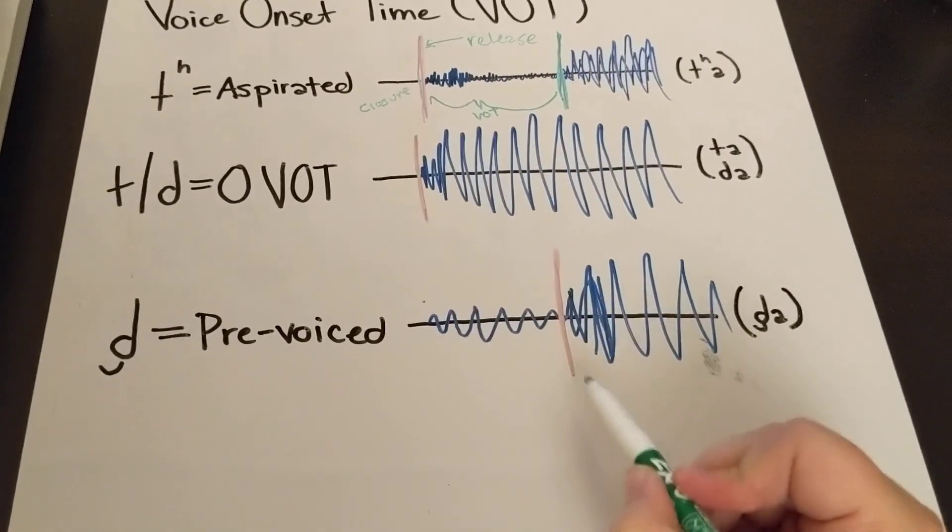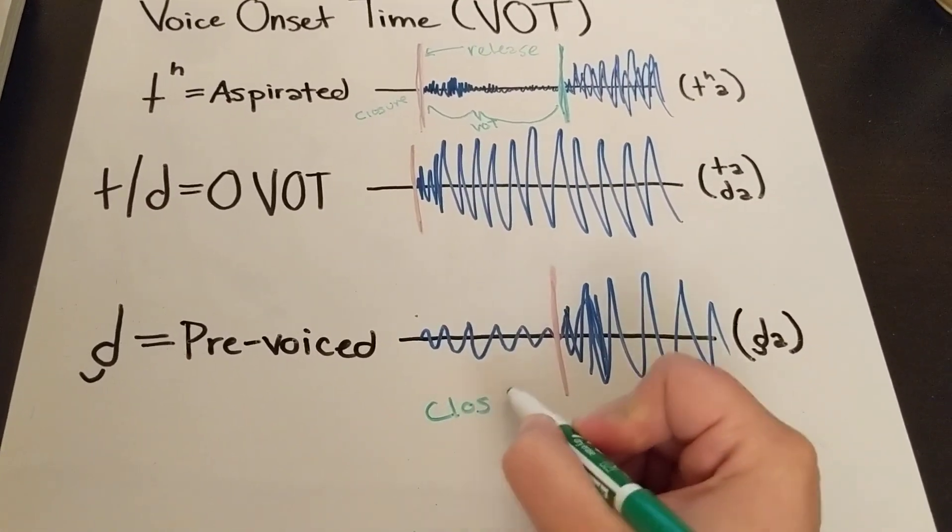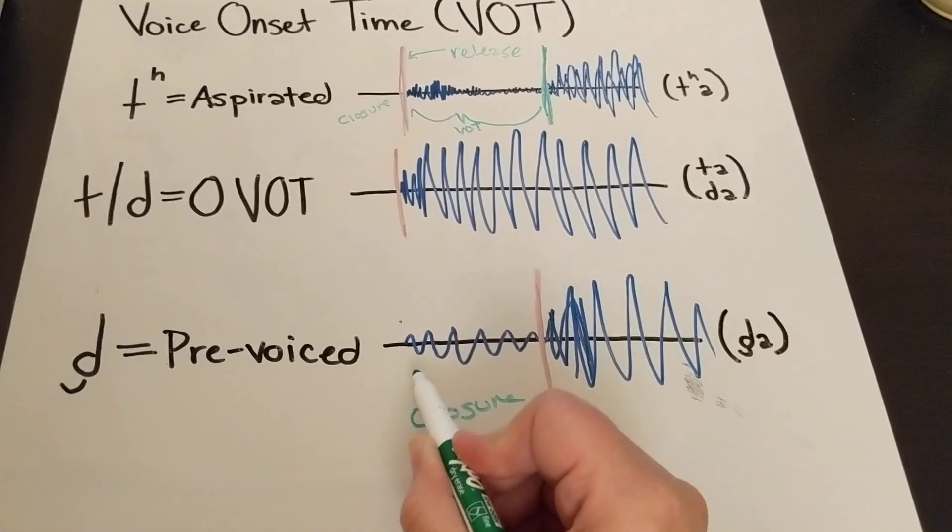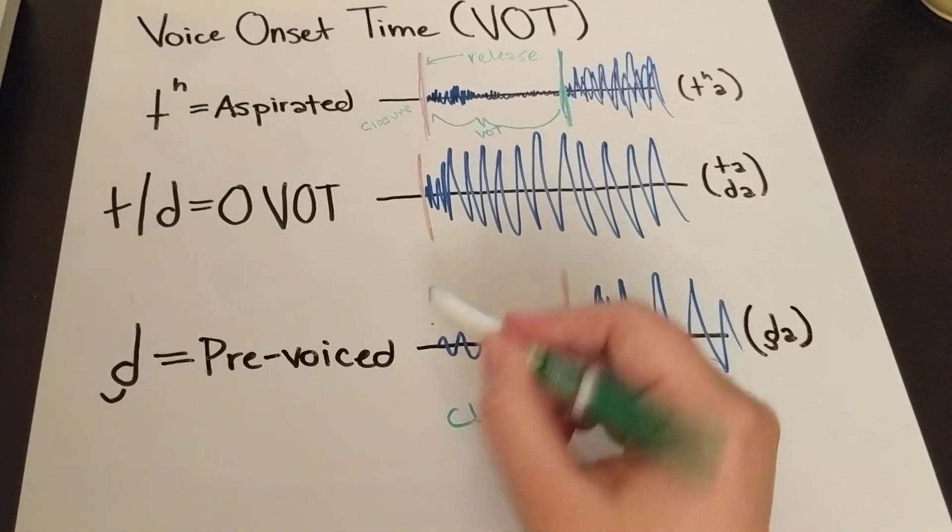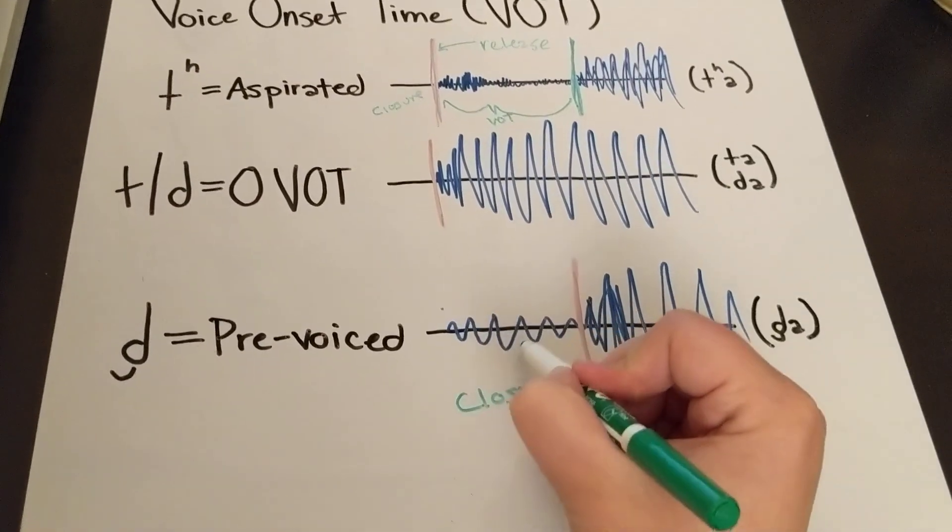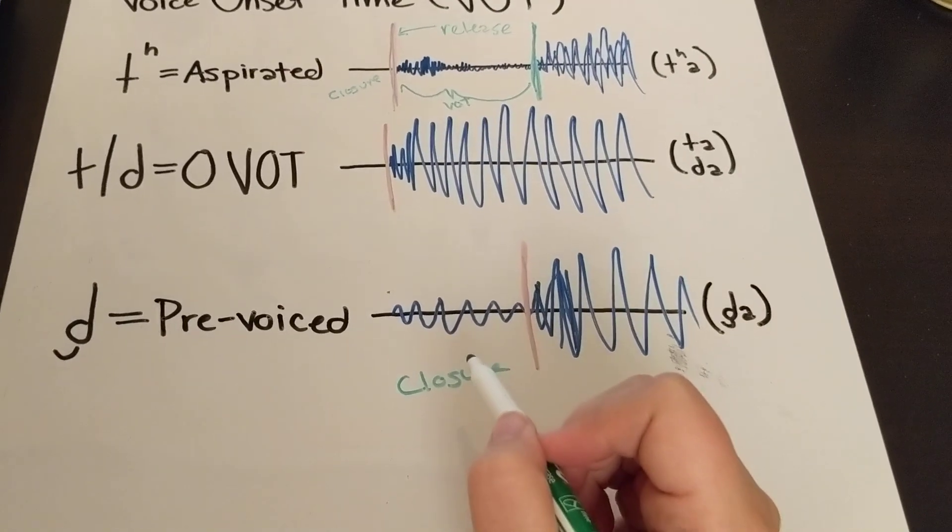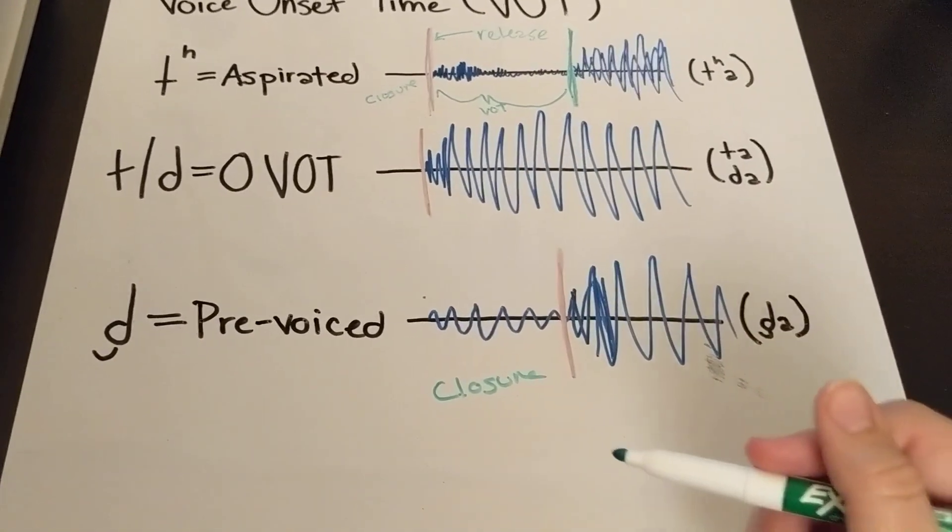In a pre-voiced sound, you have the closure, but the closure is here. And you can see it's not silent during the closure. And usually when you look at acoustic signals, you get this weird single line, very wiggly single line. That's what it looks like if you're looking at the acoustic signature.